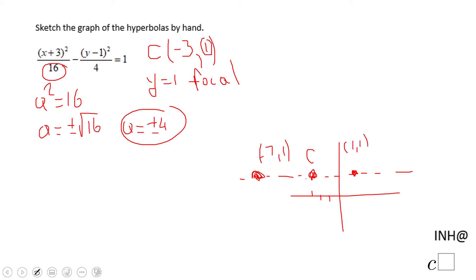And we have the two vertices. The next thing you really want to find out is what are the asymptotes for this hyperbola. For that reason, we're going to need to find b. And b squared is 4, so b will be square root of 4, plus or minus, and that will be 2.